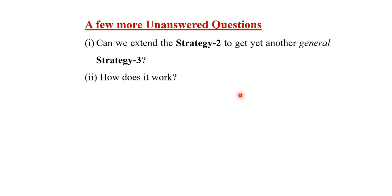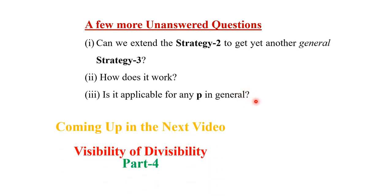Well, so first of all, but a few more unanswered questions remain. First, can we extend this strategy 2 to get yet another general strategy 3? Next question, and if we can, then how does it work, what is the mathematical rationale? And again is it applicable for any p in general? So all these answers will be coming up in the next video, visibility of divisibility part 4 and till then, thanks for watching. Thank you very much.